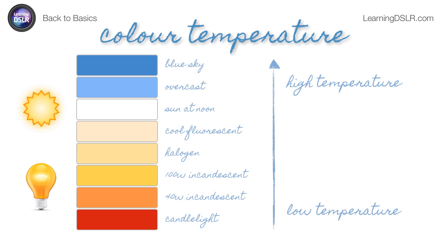So color temperature — you can think of all these different steps. We've got candlelight at the bottom, we've got our incandescent and tungsten bulbs and halogen lights in our homes, we have fluorescent lights, and we have of course the sun and different kinds of outdoor situations that all have this effect.